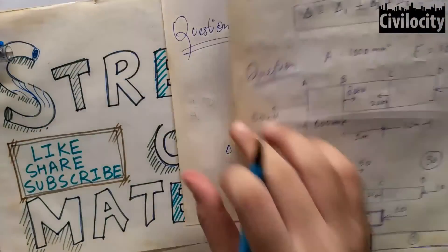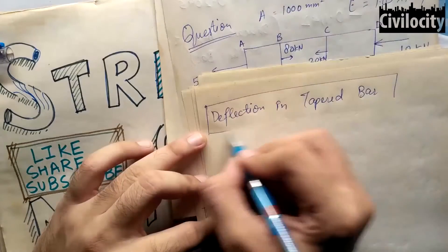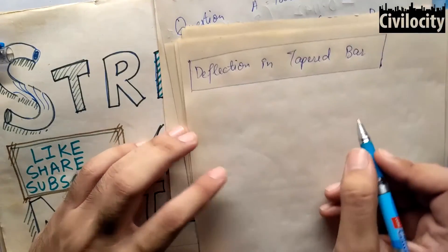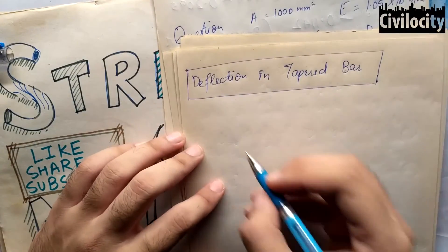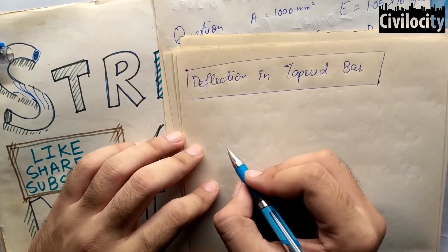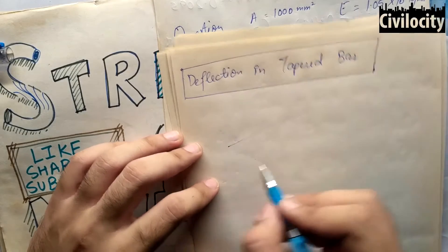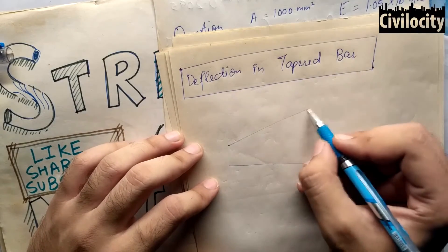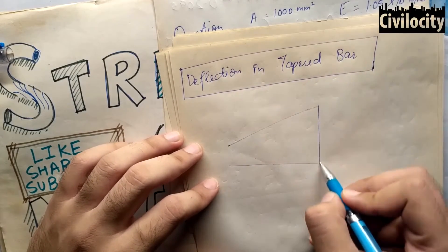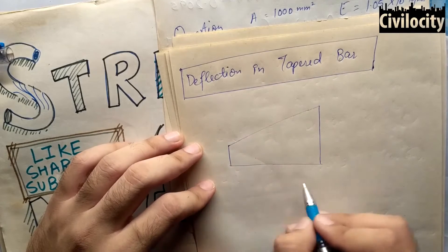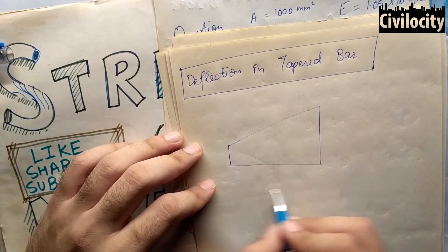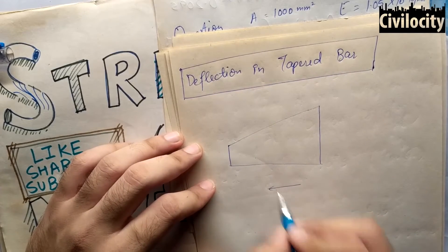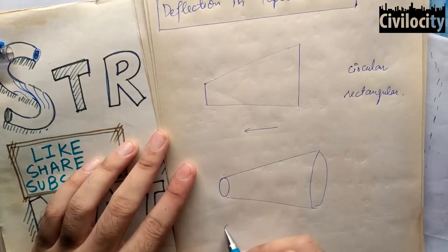Now let's talk about deflection in tapered bars. In tapered bars the cross section decreases constantly up to a certain length. There are two cases: one is the circular tapered bar and one is the rectangular tapered bar. Let's start with the circular tapered bar.